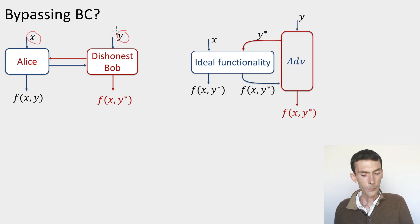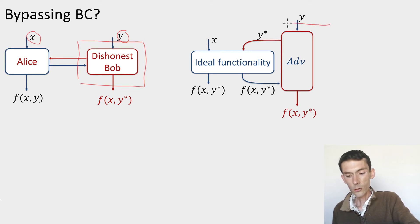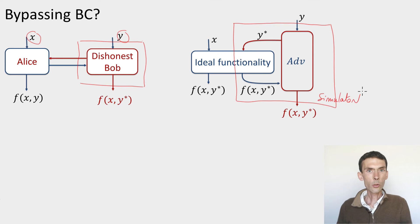Let's remember what this means. It means that for any dishonest Bob, there should exist a simulator, that here I'm calling adversary, that takes the same input as Bob, produces the same output. But the only thing the simulator has access to is the ideal functionality. Now, I claim that if the protocol is secure against any dishonest Bob, then as a consequence, it is the case that Alice can compute the function f of x and y for any input x of her choice. So she can also compute f of x prime y for any x prime different from x.